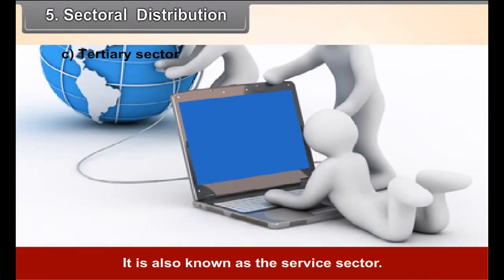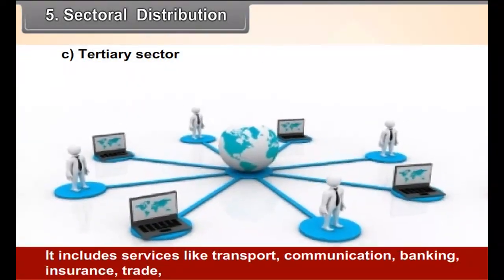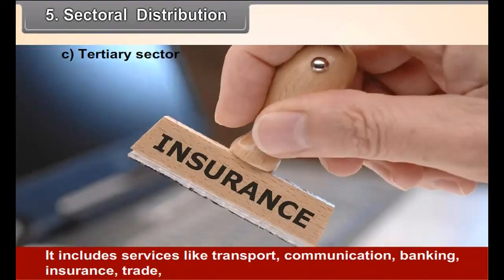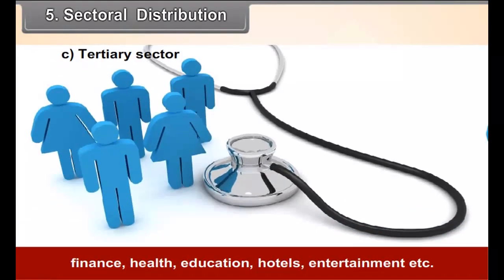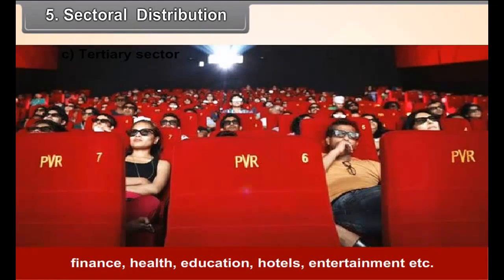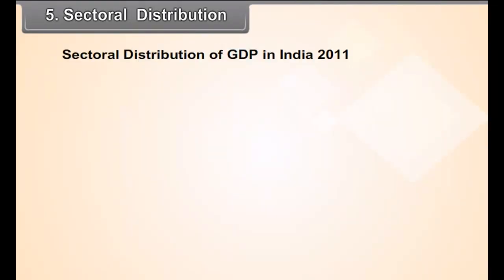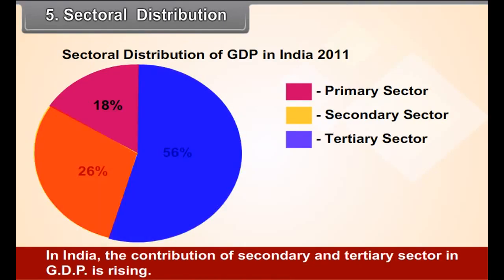The Secondary sector is also called the industrial sector. It includes occupations related to manufacturing, construction work, electricity, natural gas, water supply, etc. The Tertiary sector is also known as the service sector. It includes services like transport, communication, banking, insurance, trade, finance, health, education, hotels, entertainment, etc.